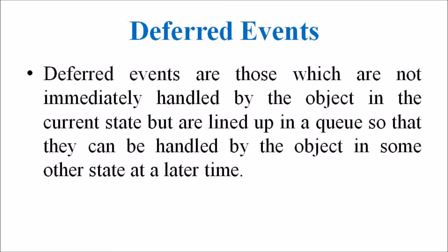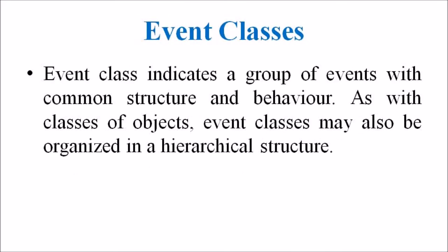Event classes indicate a group of events with common structure and behavior. As with classes of objects, event classes may also be organized in a hierarchical structure. Event classes may have attributes associated with them, with time being an implicit attribute. For example, consider the event of departure of a flight of an airline, which we can group into classes like flight departure, including flight number, from city to city — that is, the destination and the route.